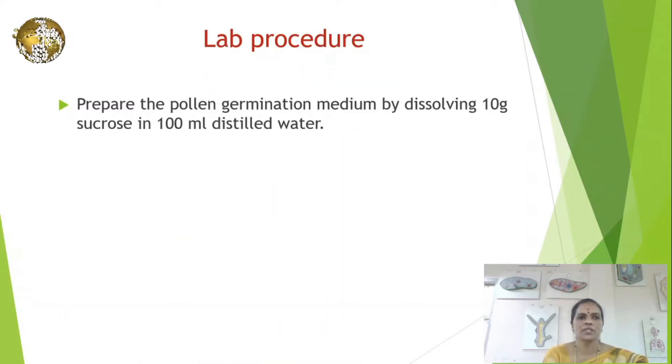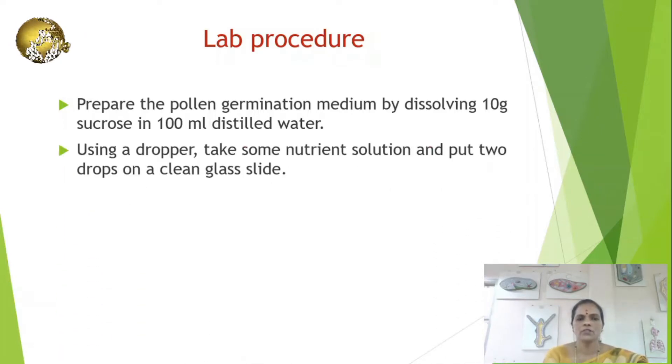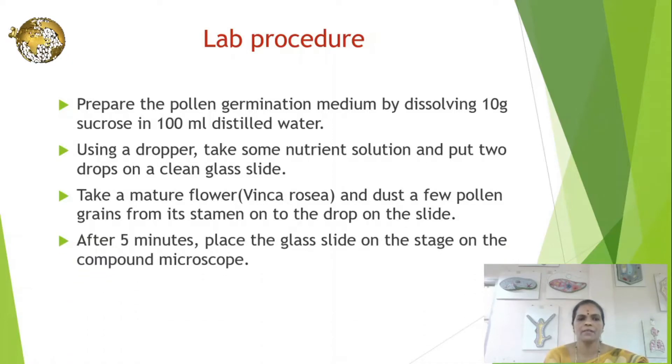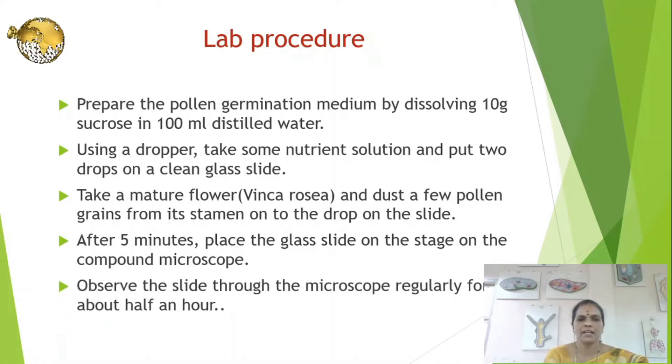Coming to the lab procedure: prepare the pollen germination medium by dissolving 10 grams of sucrose in 100 ml of distilled water. Using a dropper, take some nutrient solution and put two drops on a clean glass slide. Take a mature flower - we are going to use Vinca rosea - and dust a few pollen grains from its stamen onto the drop on the slide.